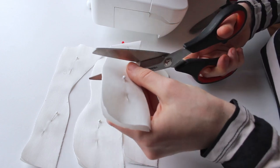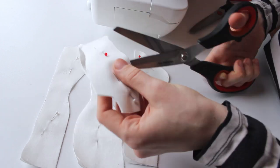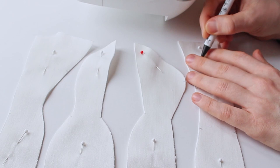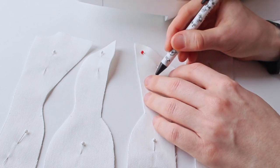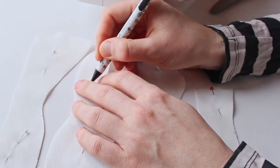Clip the notches about halfway through the seam allowance from the edge of the fabric. Now you can also write the names of the patterns, so you won't get them mixed up later.